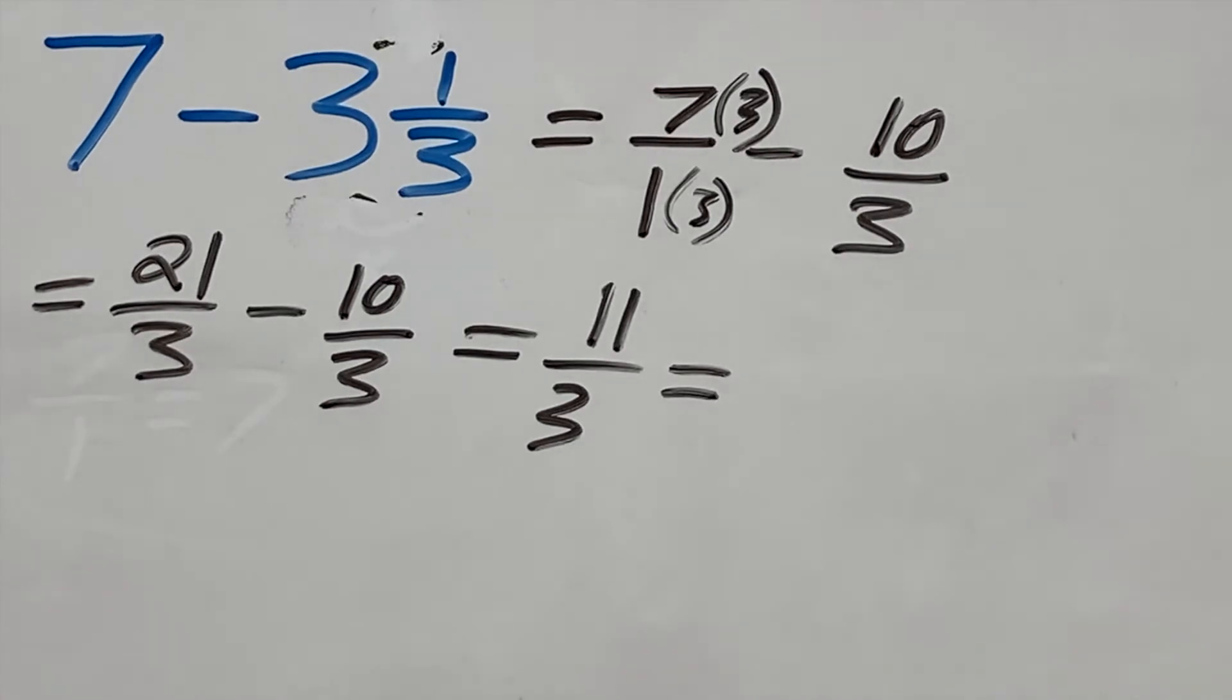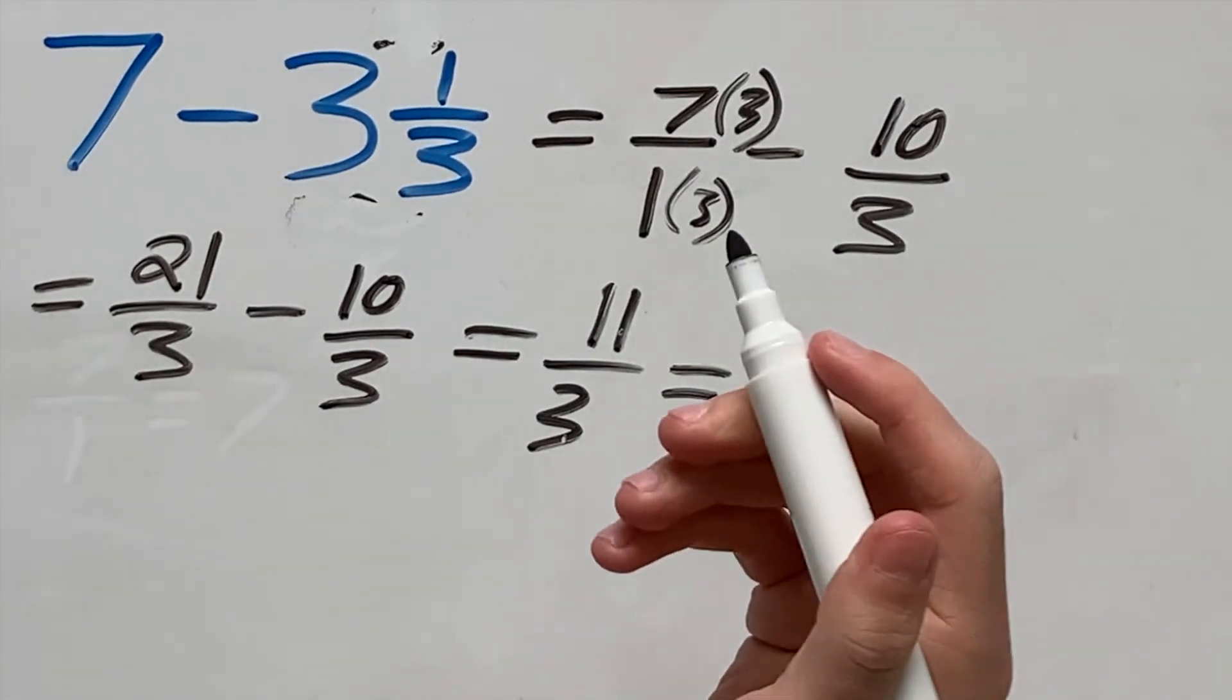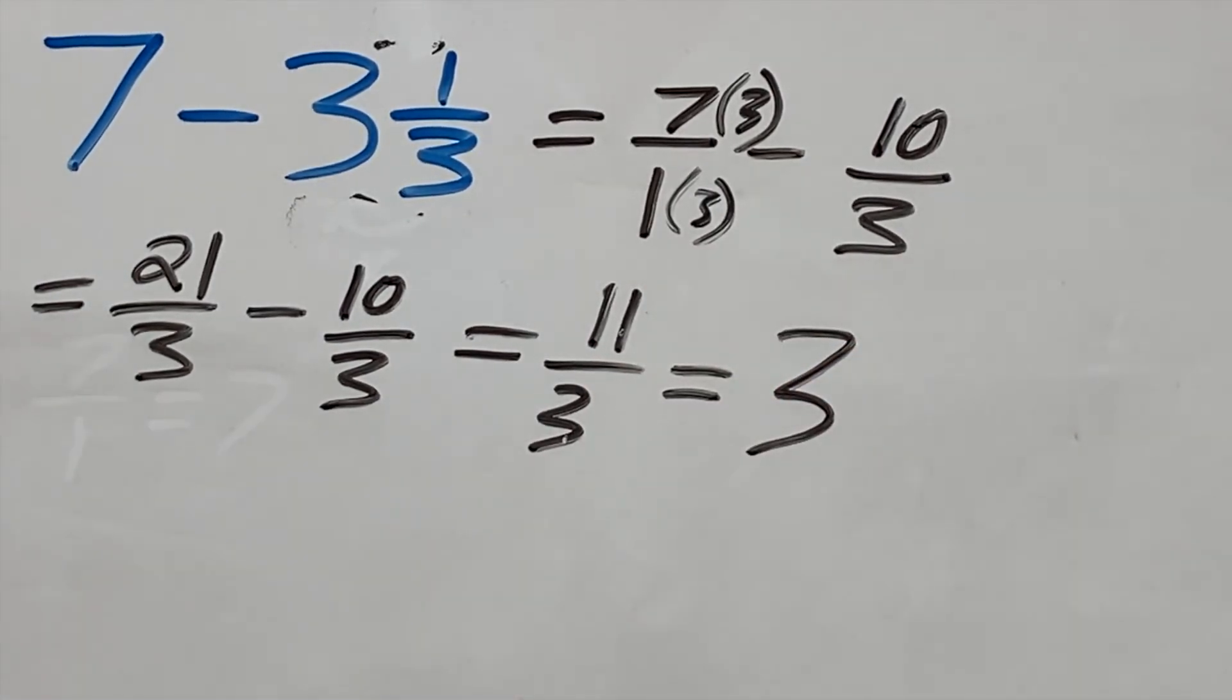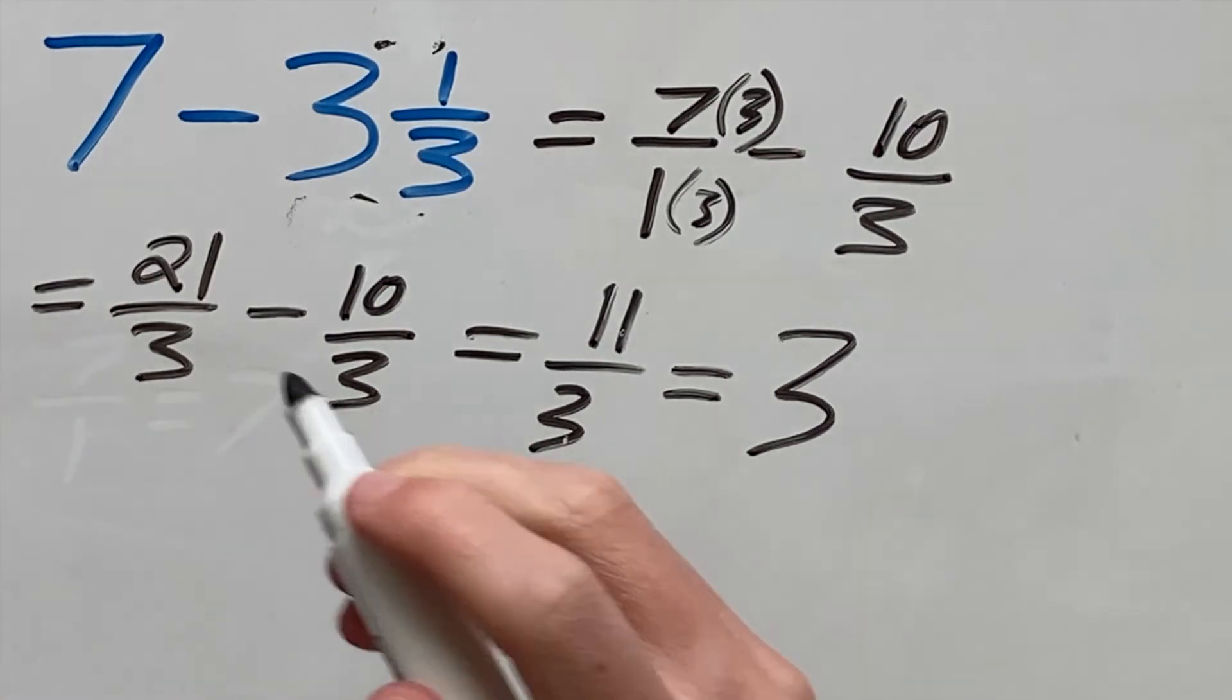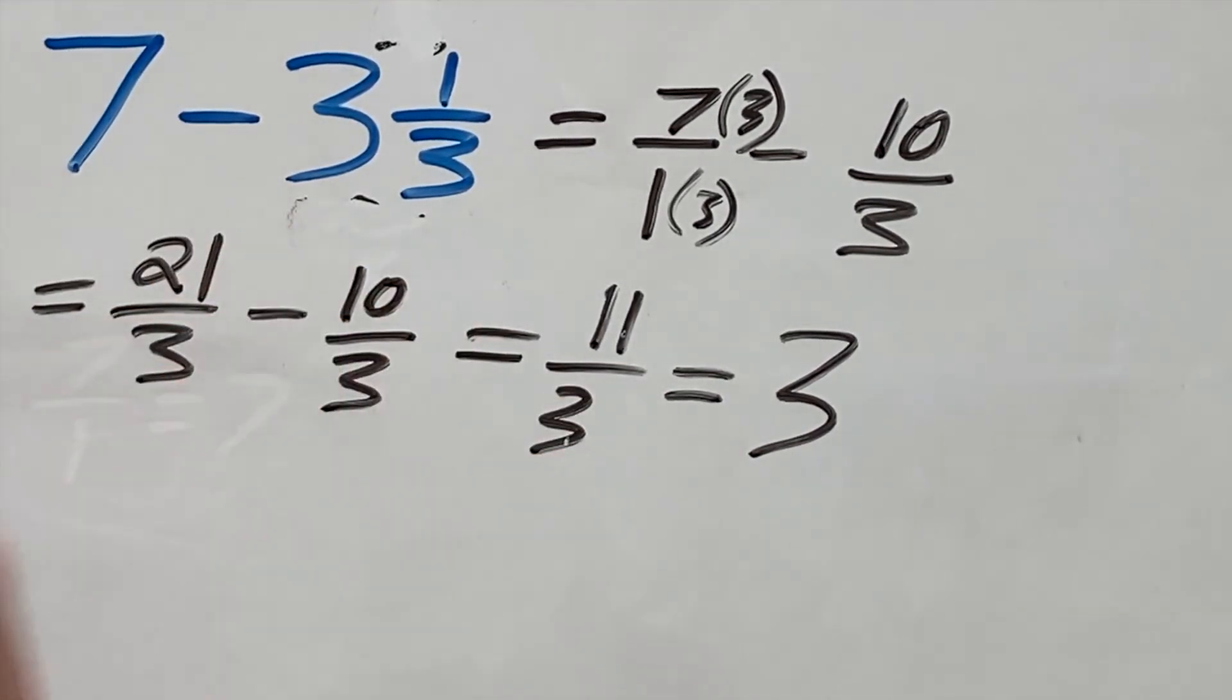But if you want to finish as a mixed number, just look how many times 3 goes into 11. 3 goes into 11 three times, because 3 times 3 is 9. And then there's a remainder of 2.